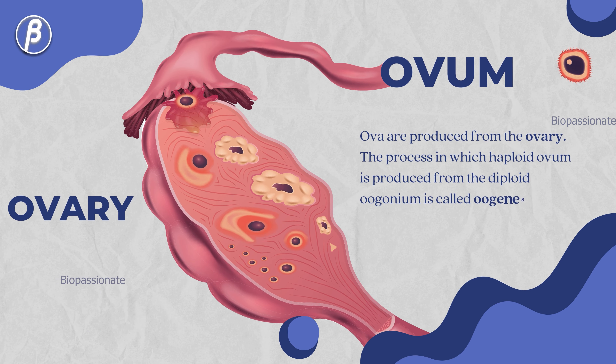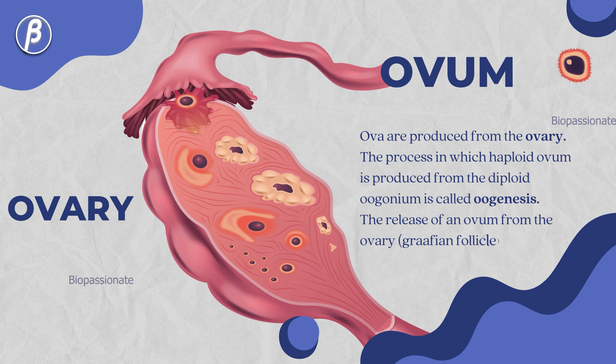The process in which a haploid ovum is produced from the diploid oogonium is called oogenesis. The release of an ovum from the ovary is called ovulation.